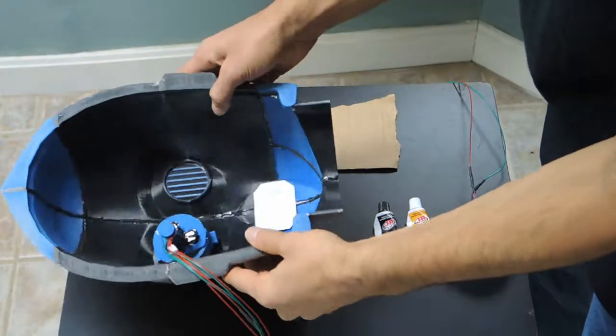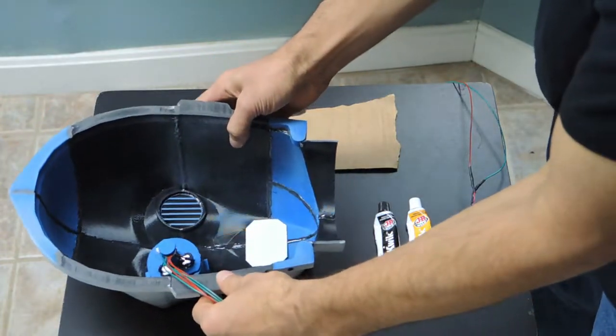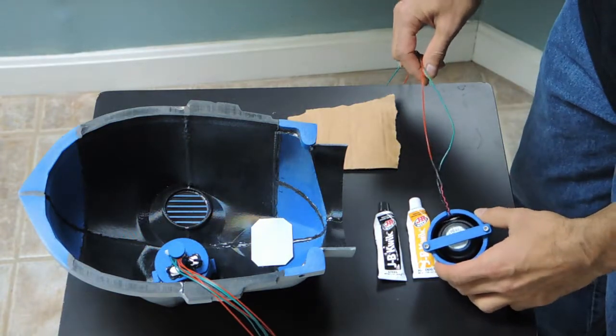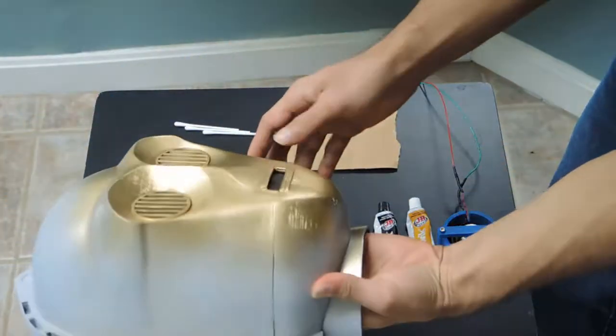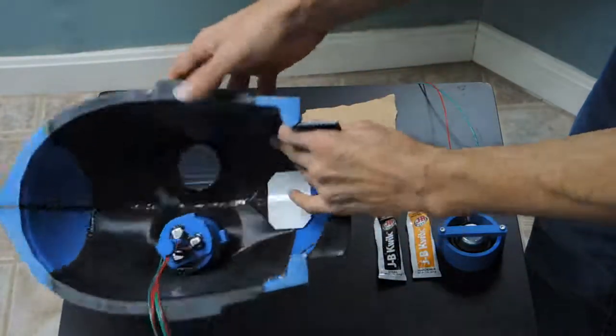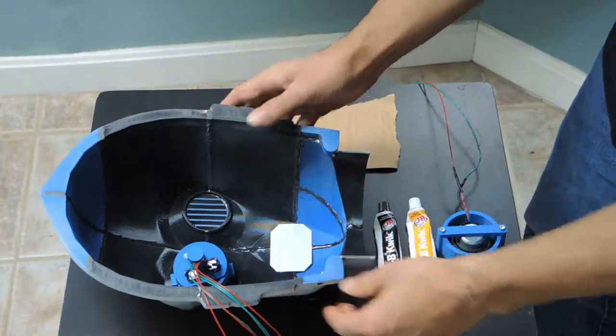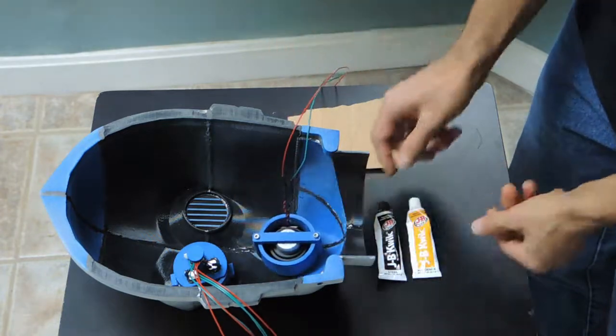Now we have the front half of C-3PO's head with an eye assembly already bonded in place. And we're going to be working on bonding the speaker in and you can see that I already have a small black foam gasket that will cover his mouth and cover up the speaker and give it a nice uniform appearance. The speaker will also be bonded in with the two part epoxy and it'll go right there.